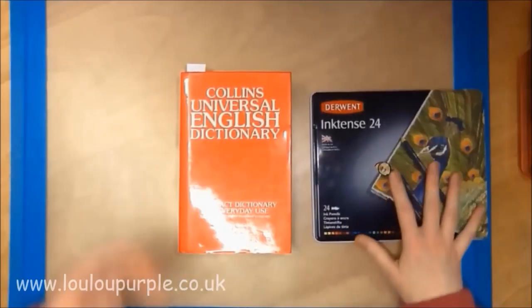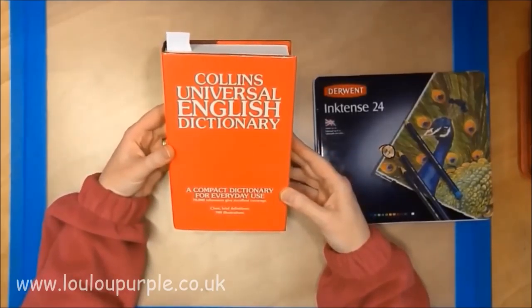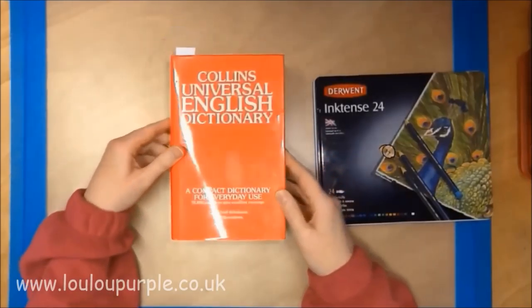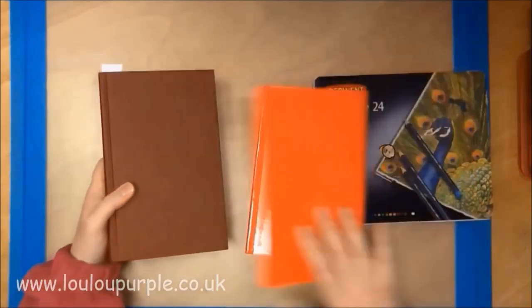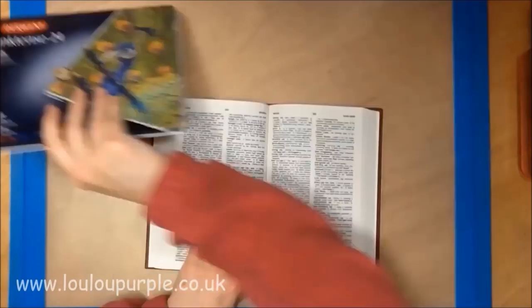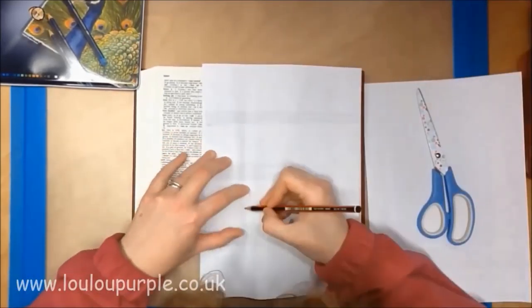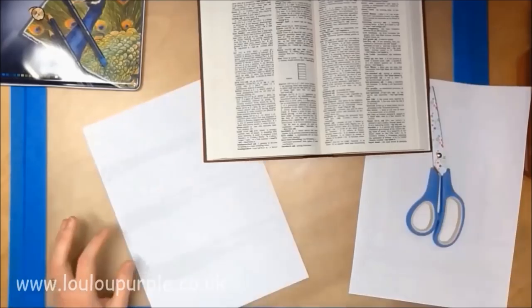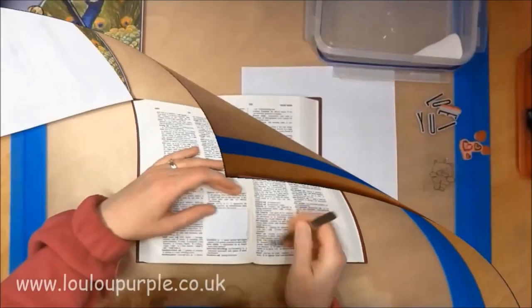Today I am using my new dictionary which I purchased off eBay for about four pounds with postage. I have just taken off the cover and I'm going to be using the page with Love. First of all, I am covering the word love and its description up with a piece of copy paper and using a temporary adhesive spray to stick it in place.